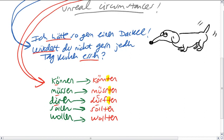And so that transforms can into could, must into, oh boy, what would that be? Let's just say would have to. Dürfen would be transformed into would be allowed to. This is really awkward. Sollen would be should and wollen would be would want to. I think that's right. Like I said, not an English teacher, a German teacher. But you get the idea.